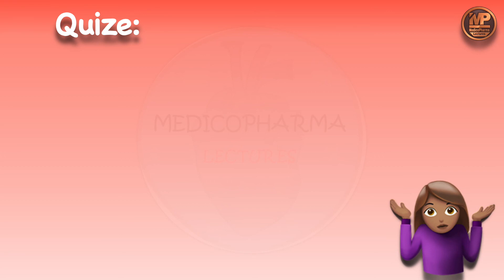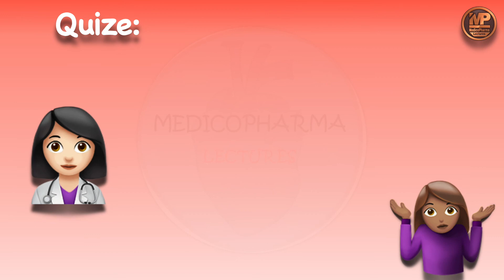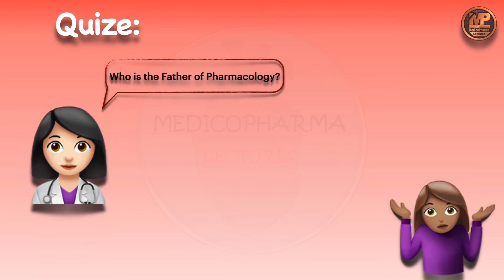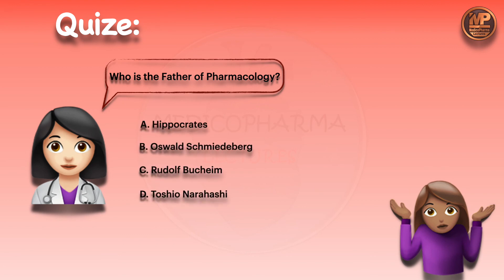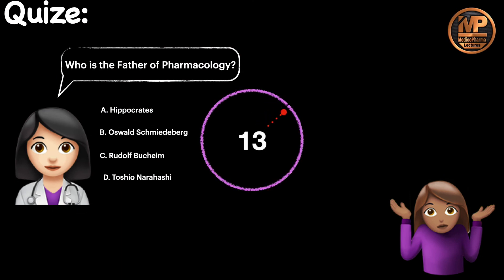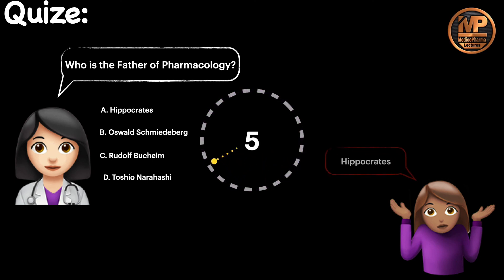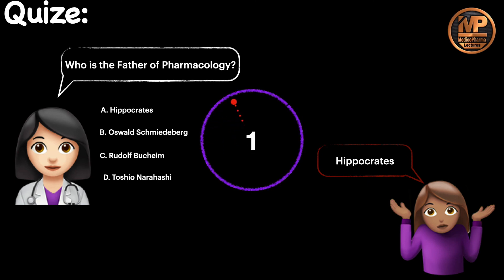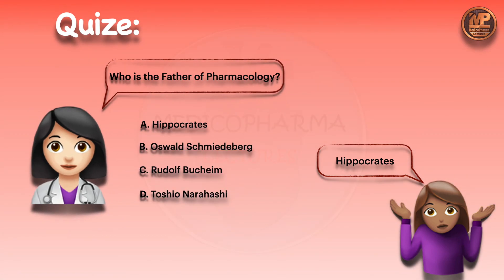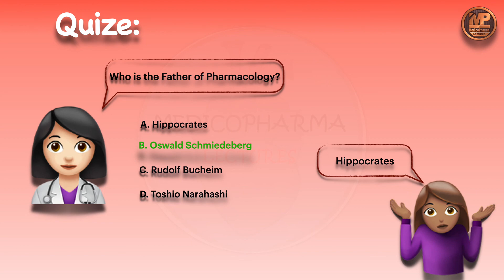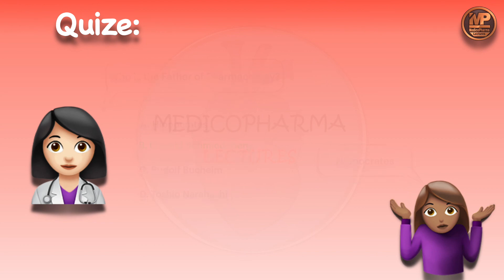Quiz time: who is the father of pharmacology? Alice answered Hippocrates, but the correct answer is Oswald. Hippocrates is the father of medicine, Rudolf was Oswald's professor — many people confuse these names. Tosio is the father of modern pharmacology. Please mention your answer in the comment section.